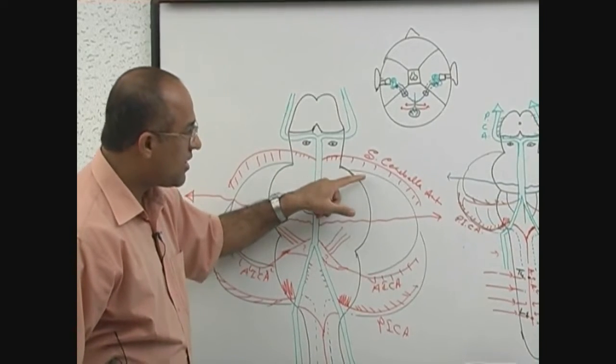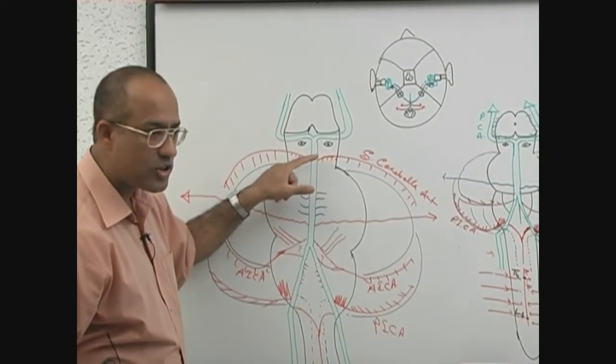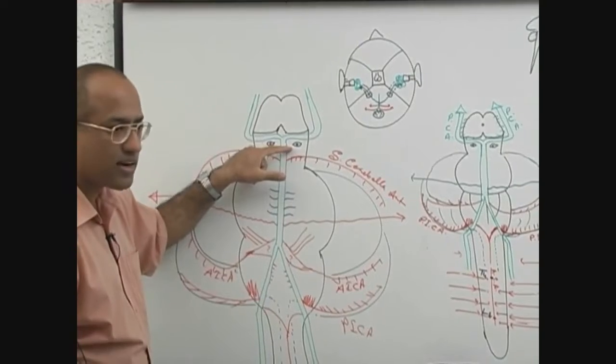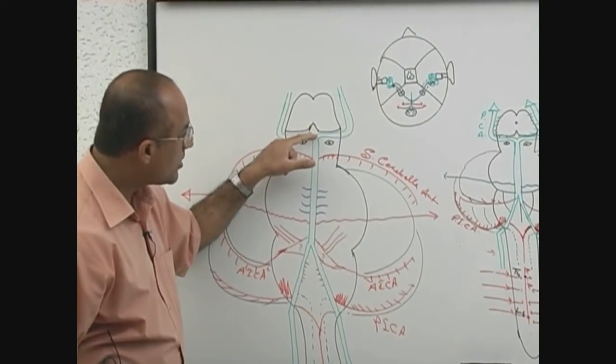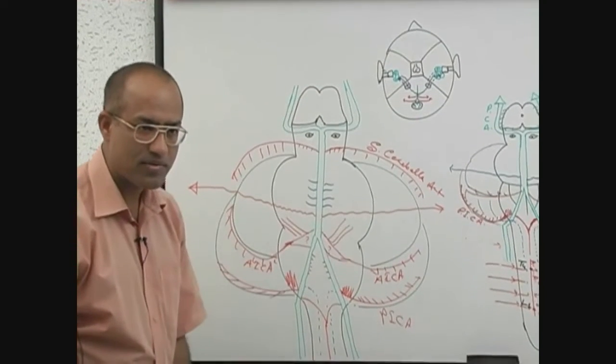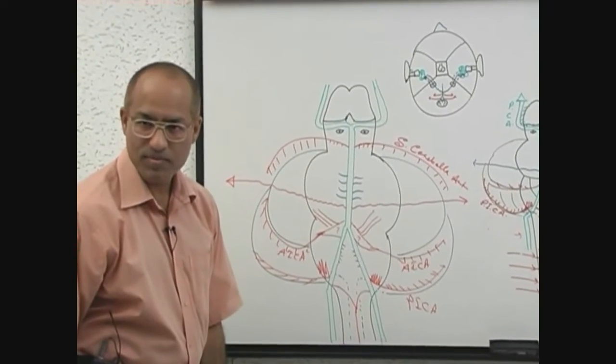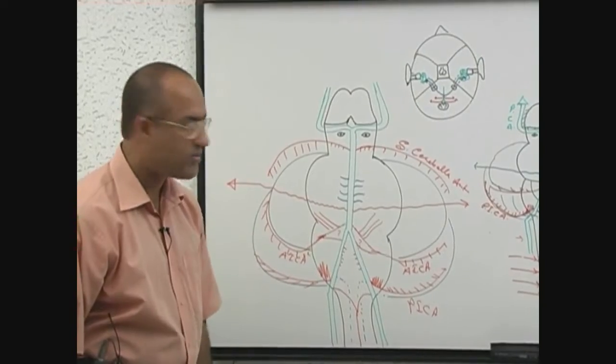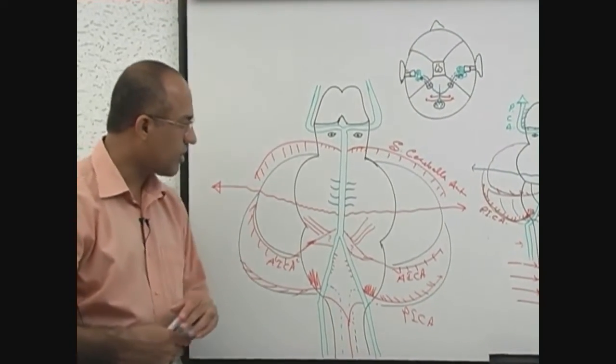Superior cerebellar originates, it is moving under the third nerve and posterior cerebral is above the third nerve. Am I clear, no problem up to this?